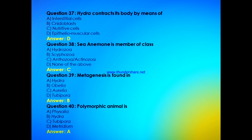Sea anemone is a member of class — Hydrozoa, Scyphozoa, Anthozoa, or Actinozoa? The answer is Anthozoa, which is otherwise known as Actinozoa — sea anemone is a member of class Anthozoa. Metagenesis is found in — Hydra, Obelia, Aurelia, or Tubipora? The answer is B, metagenesis is found in Obelia. A polymorphic animal is — Physalia, Hydra, Tubipora, or Metridium? The answer is A, Physalia.